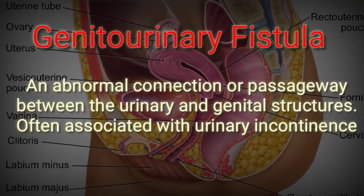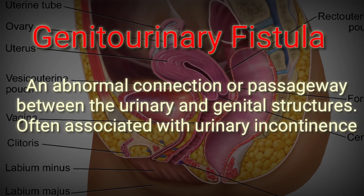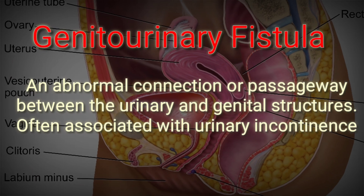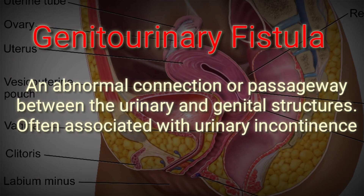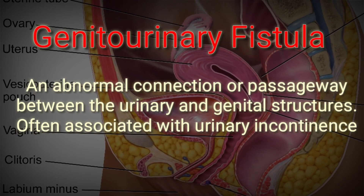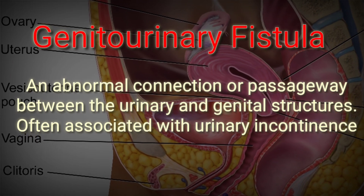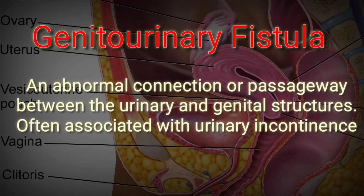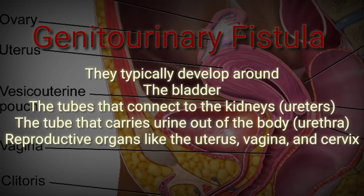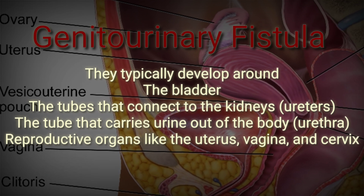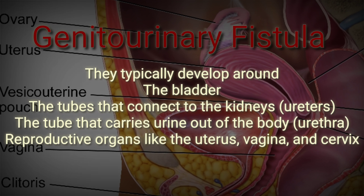A genitourinary fistula is an abnormal connection or passageway between the urinary and genital structures, often associated with urinary incontinence. These typically develop around the bladder, the ureters (the tubes that connect to the kidneys), and the urethra (the tube that carries urine out of the body).